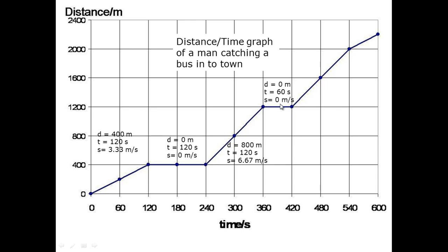This section of the line again shows the object not moving, so it is stationary. This part of the line is exactly the same as this one here and therefore has the same speed. This is exactly the same as the speed here.